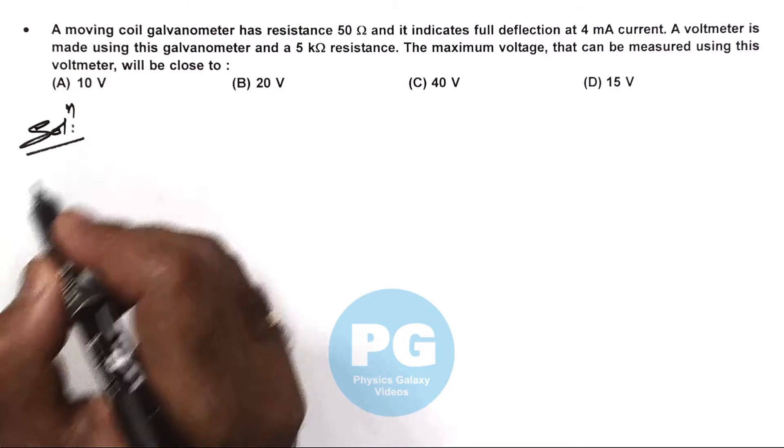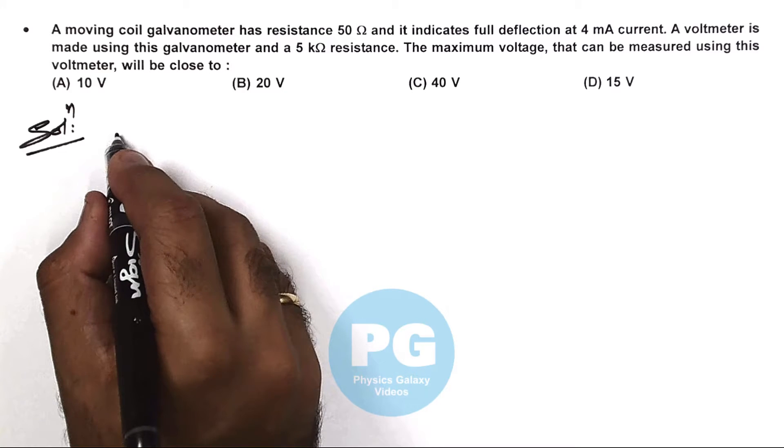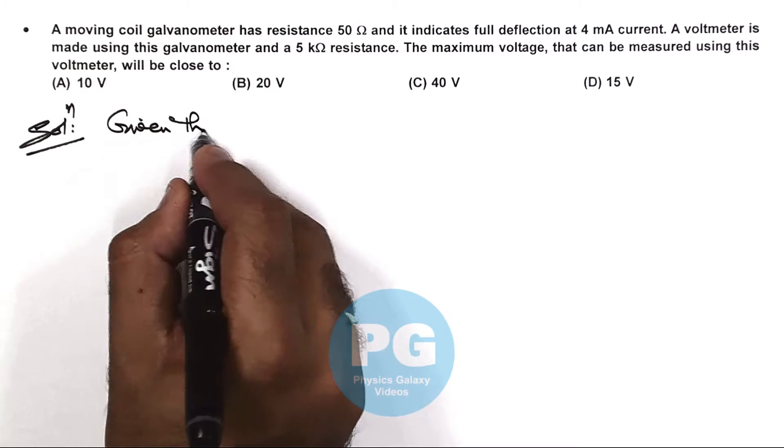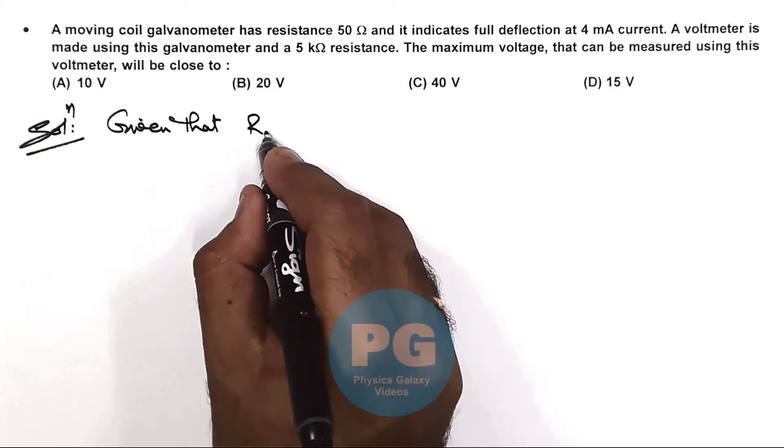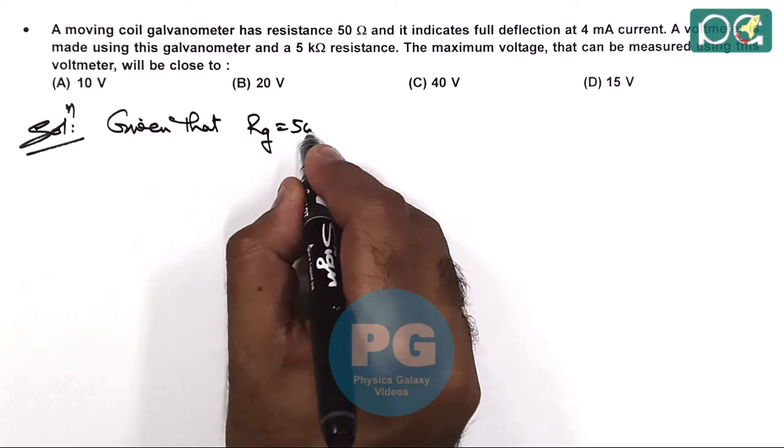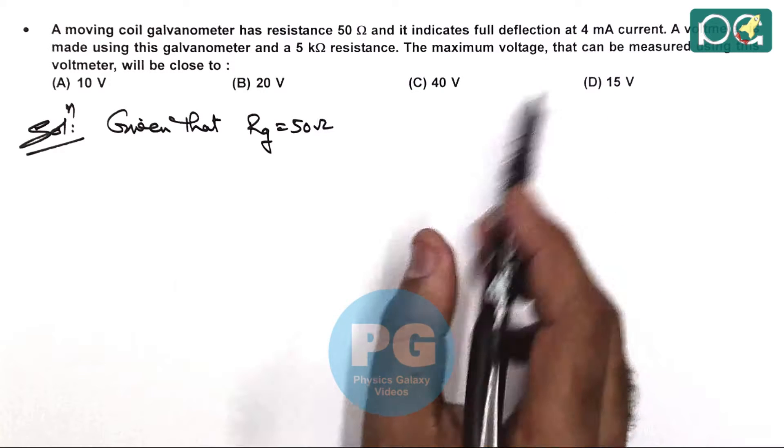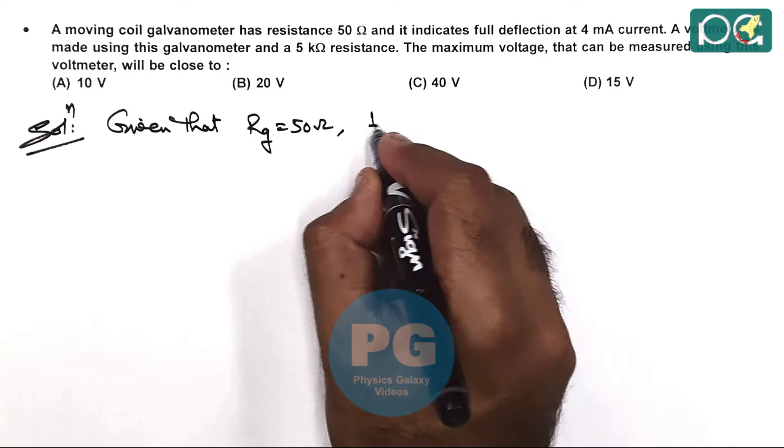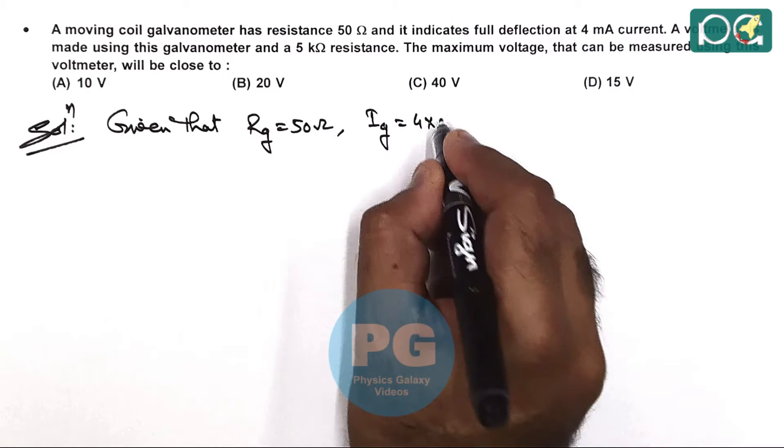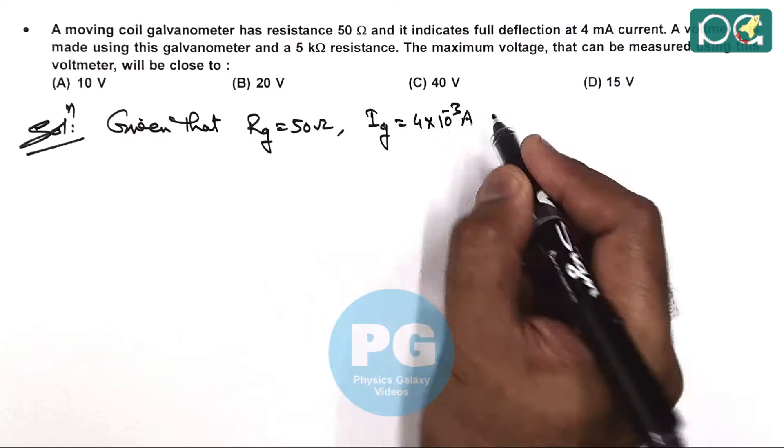Here in solution we can see, we are given that the resistance of galvanometer coil is 50 ohms and full deflection is at 4 milliampere current and its IG is given to us as 4 into 10 to the power minus 3 ampere.